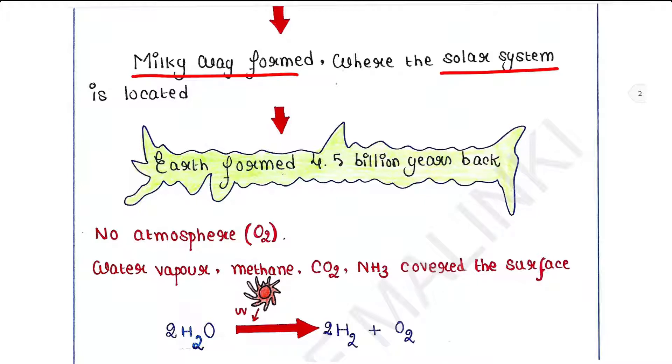Earth formed around 4.5 billion years back. That time there was no atmosphere, that means oxygen was absent in earth.